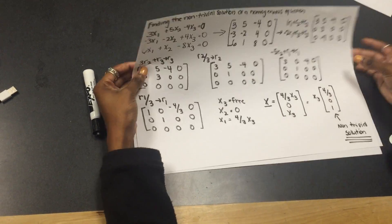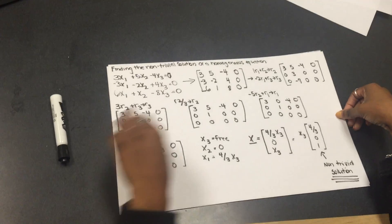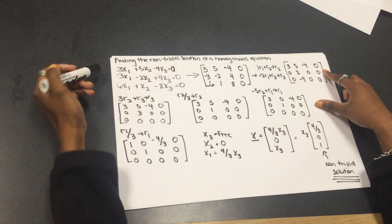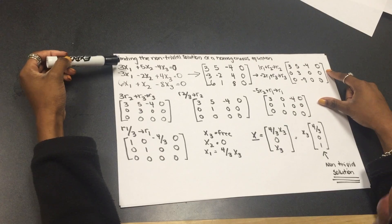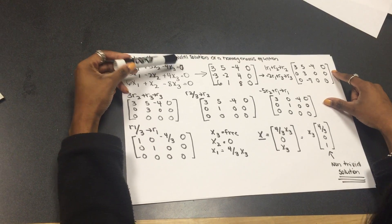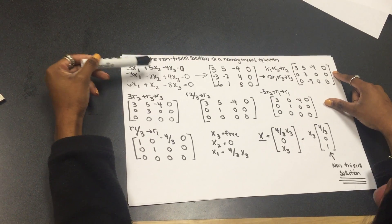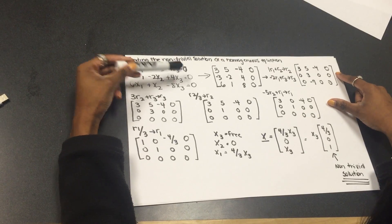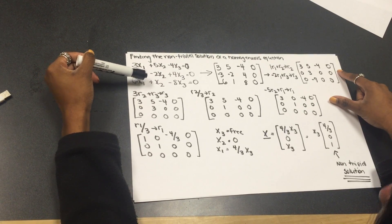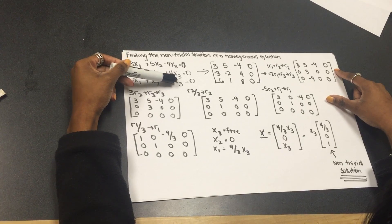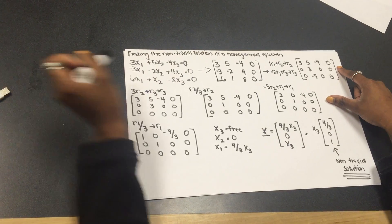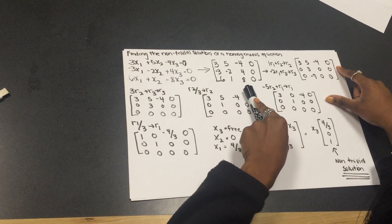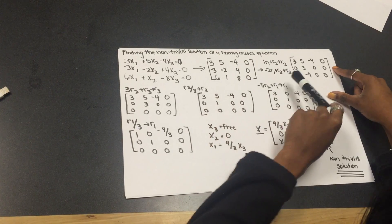So, this equation here is finding the non-trivial solution of a homogeneous equation. This equation, you have 3x1 plus 5x2 minus 4x3 is equal to zero. Then you have negative 3x1 minus 2x2 plus 4x3 is equal to zero. Then you get 6x1 plus x2 minus 8x3 is equal to zero. First, you put it into the augmented matrix, and then you do row operations.